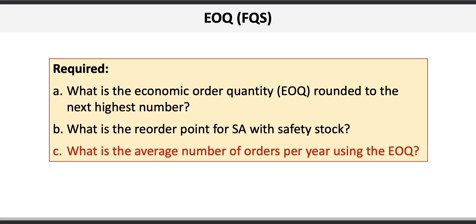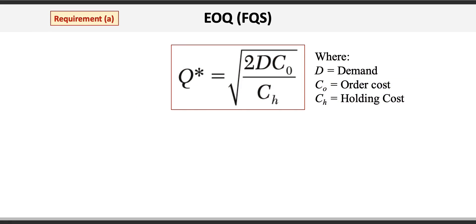So let's get started. To solve requirement A, the formula for EOQ is the square root of 2 times D times C_O divided by C_H, where D is demand, C_O is the order cost, and C_H is the holding cost. The data provides us with the demand and order cost but expresses the holding cost as a percentage per year, so we need to employ another formula to calculate C_H.